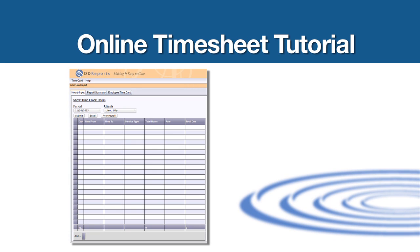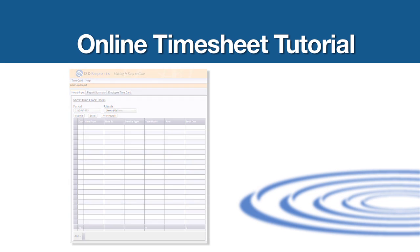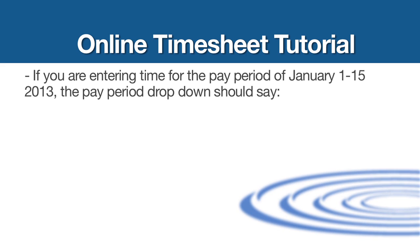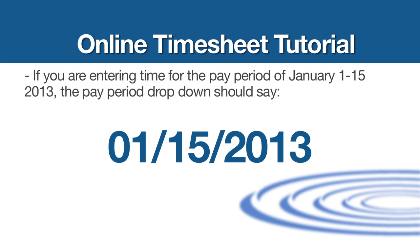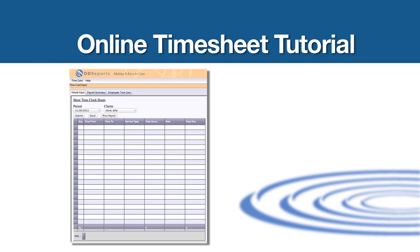After you have logged in, you will be at the time card entry screen. Please make sure that you are entering time in the proper pay period. For example, if you are entering time for the pay period of January 1st through 15th, 2013, the pay period drop-down should say 1-15-2013, the last day of the current pay period. Choose the name of the individual you are working with from the drop-down menu next to the pay period drop-down.